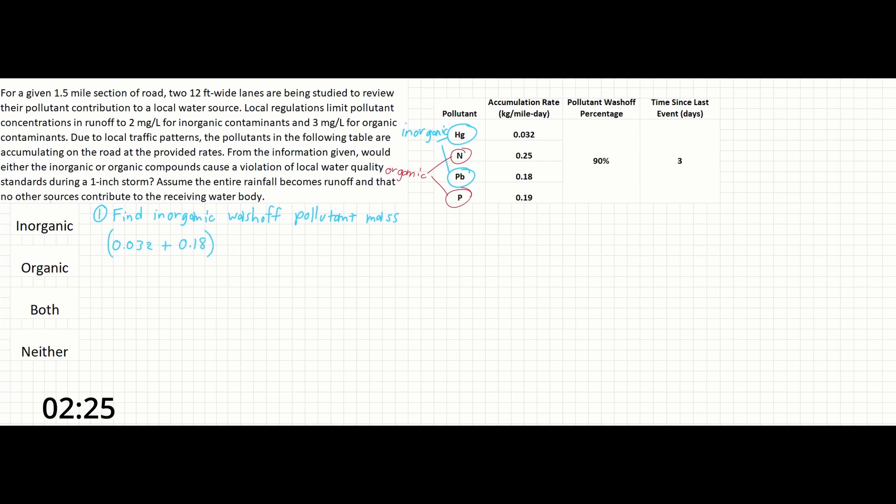These are in units of kilograms per mile day, multiplying by the number of days since our last rain event, since that will be the amount of time that the pollutants have been accumulating.